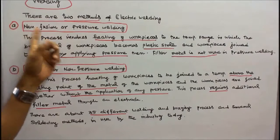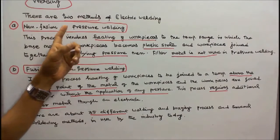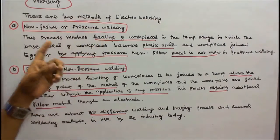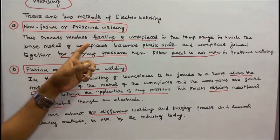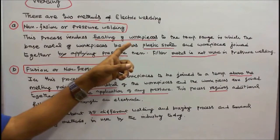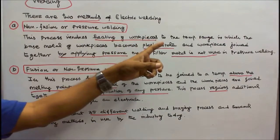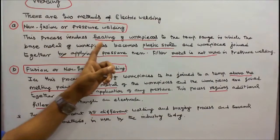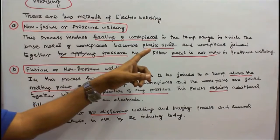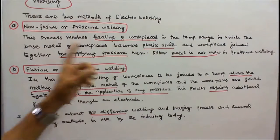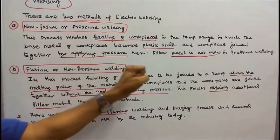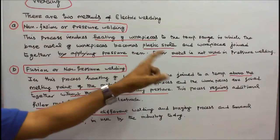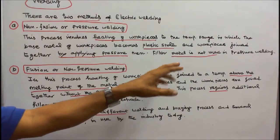One is non-fusion or pressure welding. This process involves heating of workpieces to the temperature range in which the base metal of workpieces becomes plastic state, and workpieces join together by applying pressure on them. Filler material is not required in pressure welding.